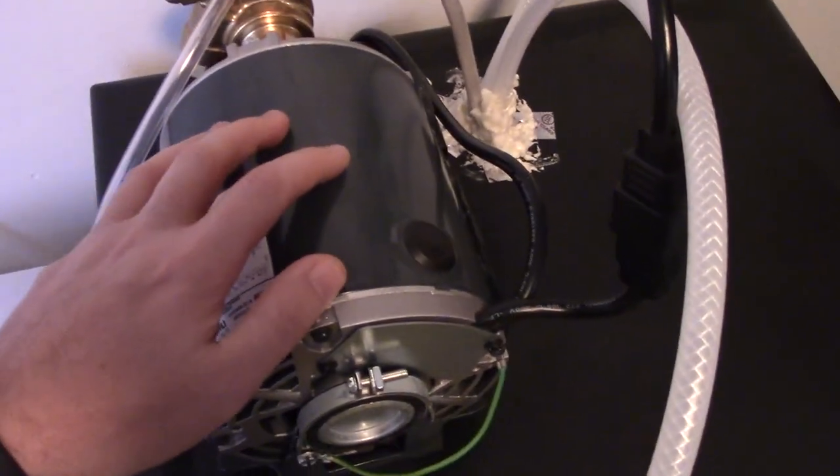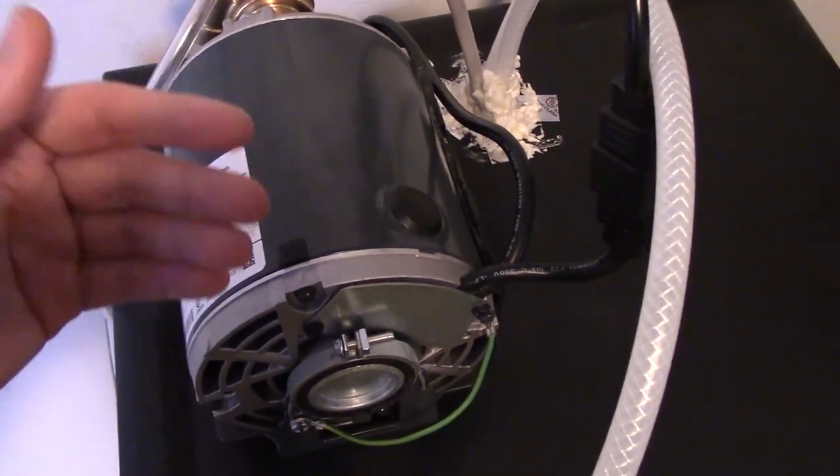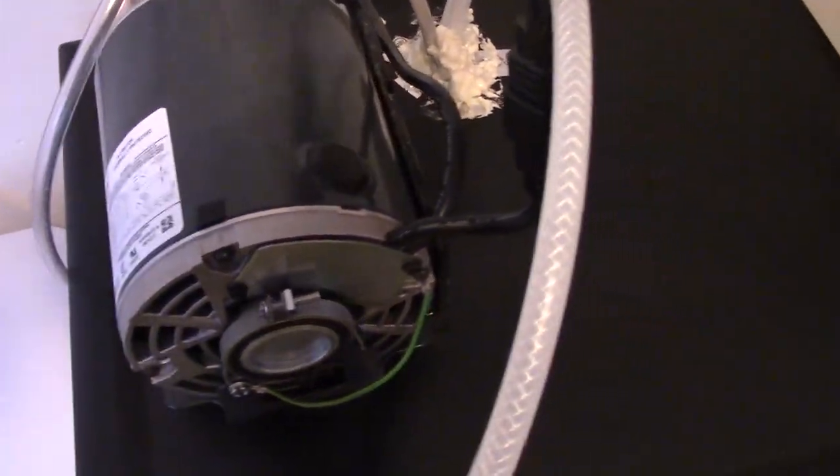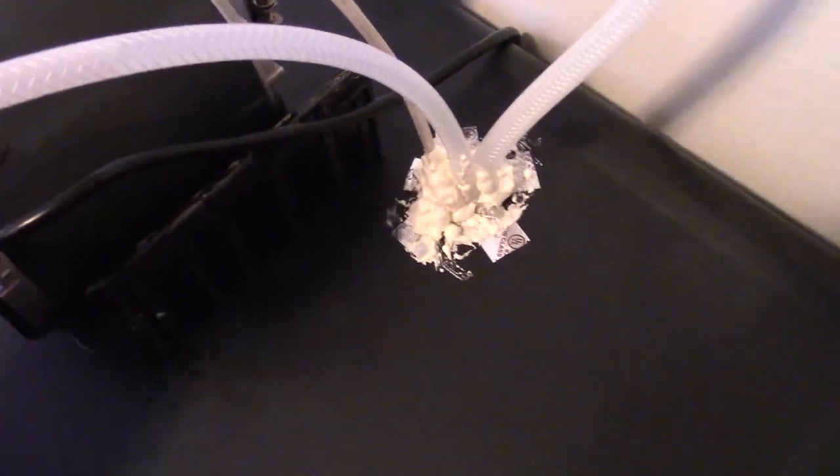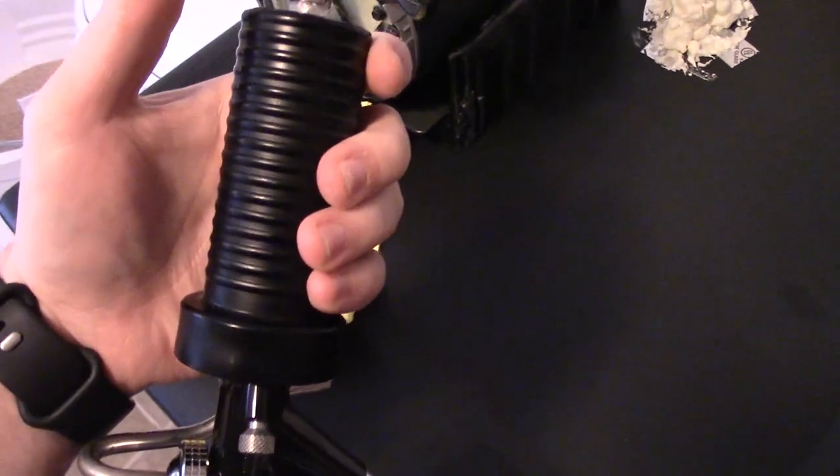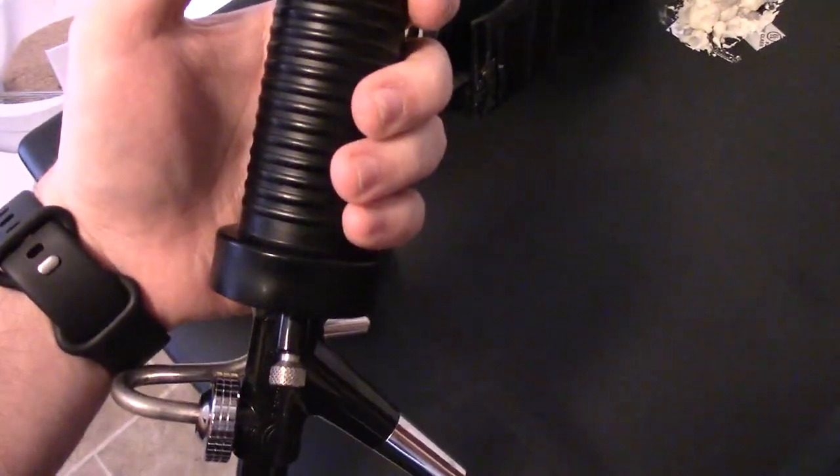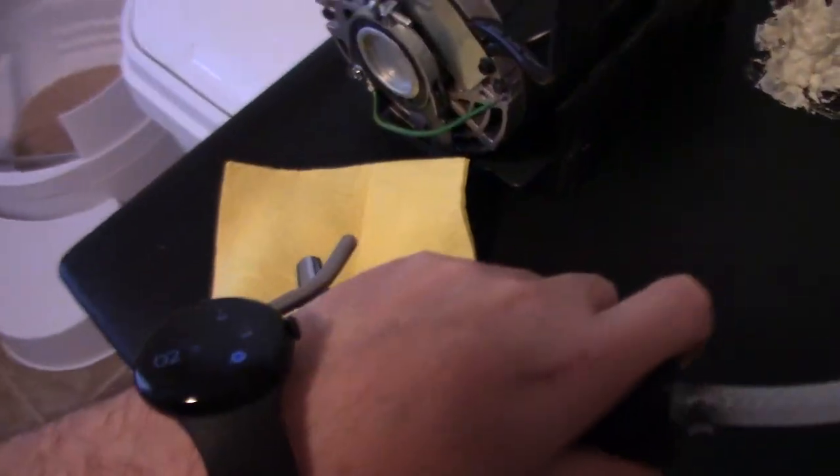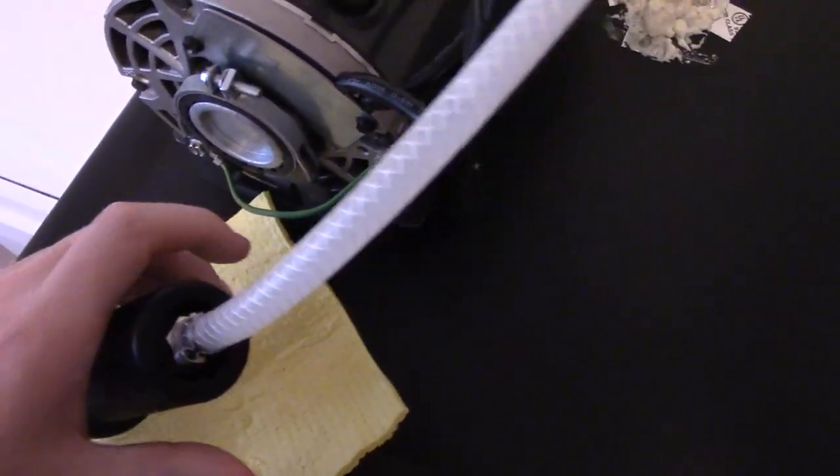So I've got the hoses coming out of here. This is the dispenser. I'm going to drop that right there. It has a flow control valve inside of it so you can control the high pressure coming out.